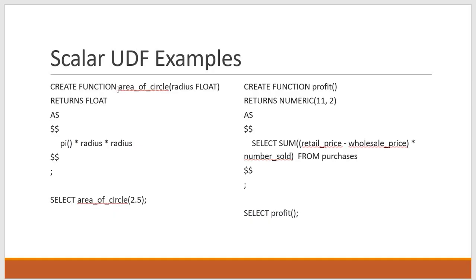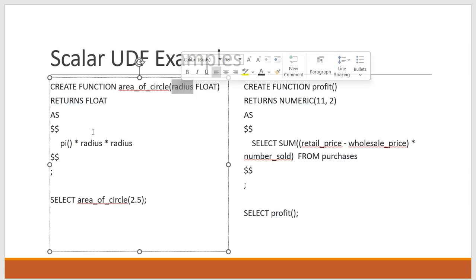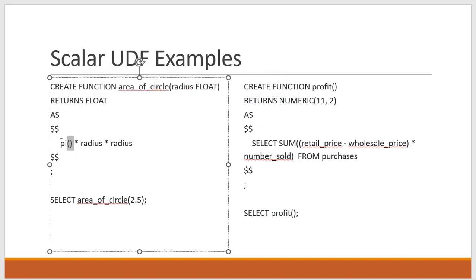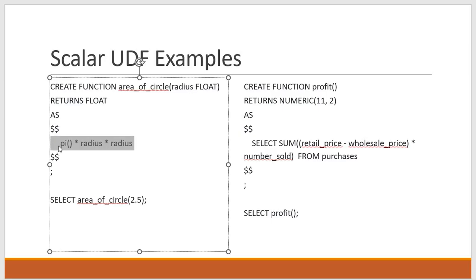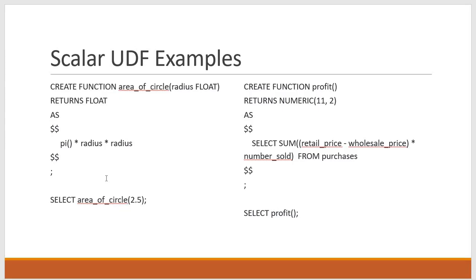Here is how a scalar UDF looks. I am creating a function to calculate the area of a circle — pi * r squared. Pi is 3.14, and Snowflake has a built-in PI() function for that. The input required is the radius of the circle. The return value is float because we are multiplying by 3.14, which is a decimal. So the function returns PI() * radius * radius.